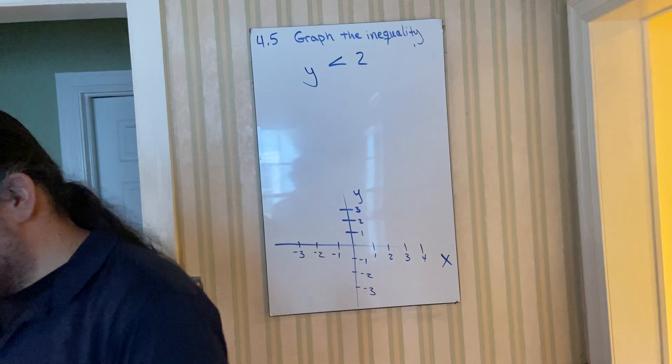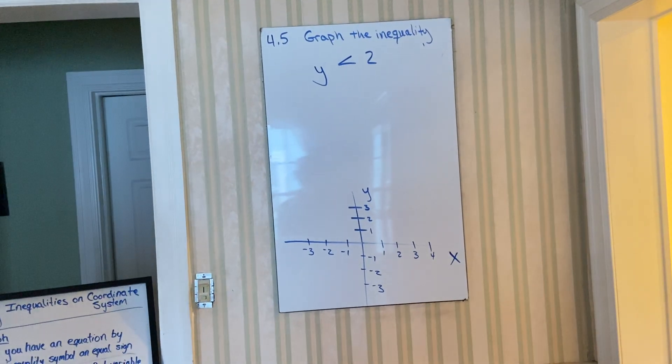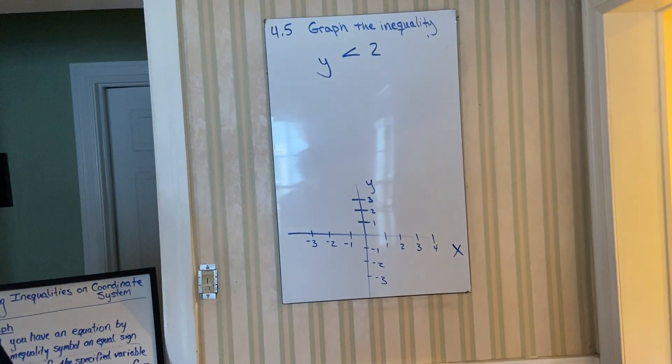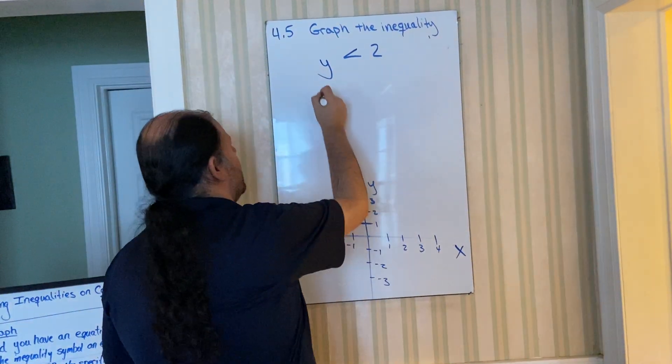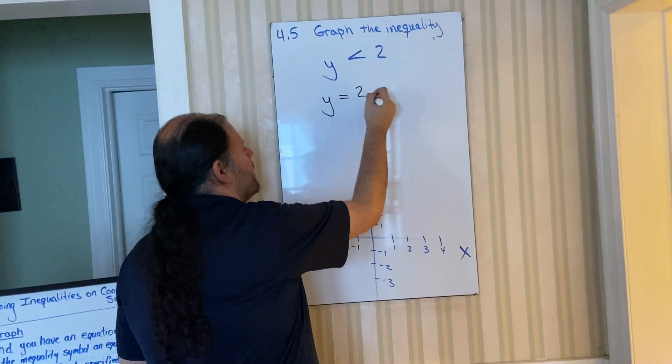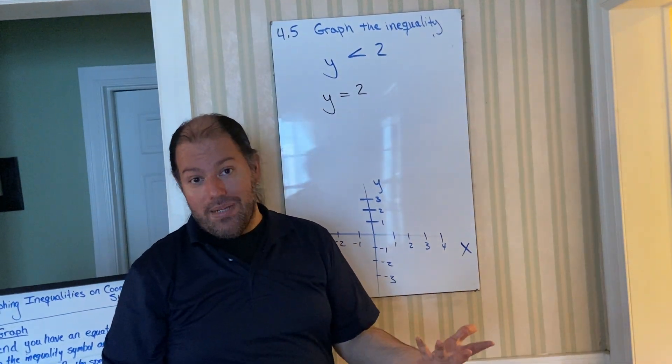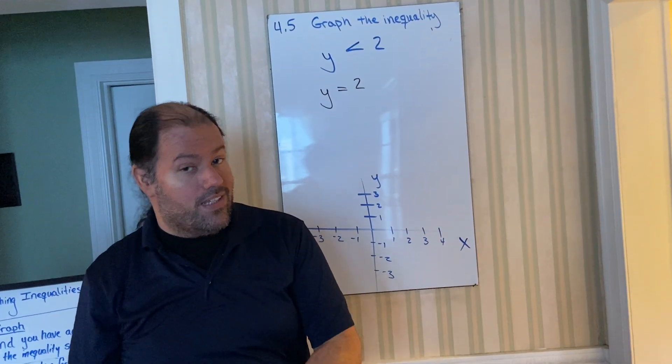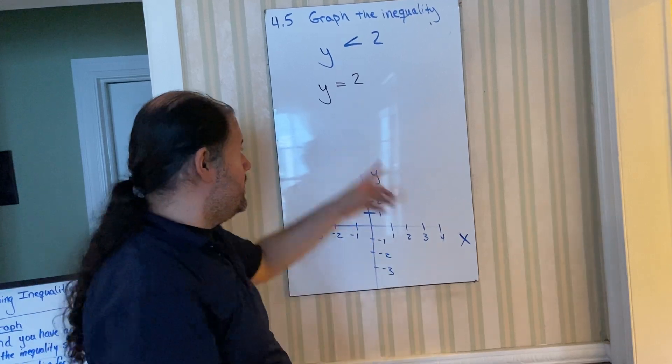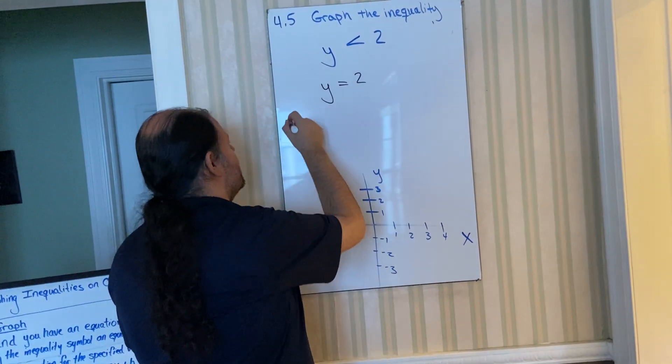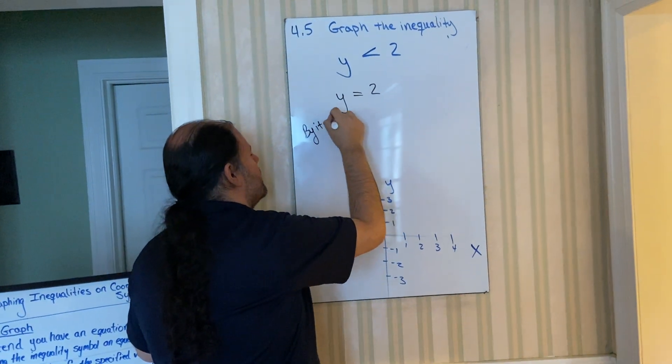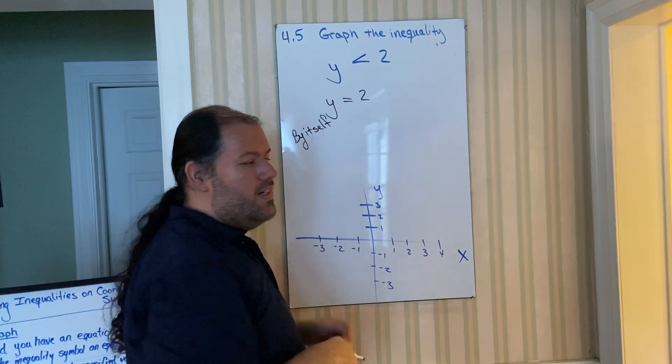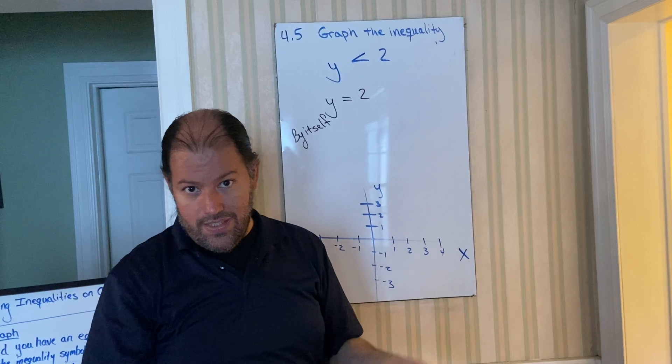The first thing we told you to do to do graphing is pretend that you have an equal sign. So y equals two. Then you would get y by itself. Unlike the other question, we didn't have y's. This one does have a y. Notice it's by itself. Okay, now that y is by itself, that's step two.